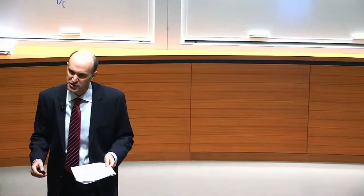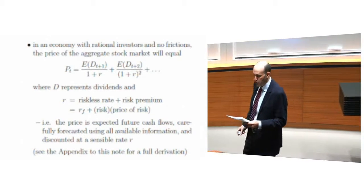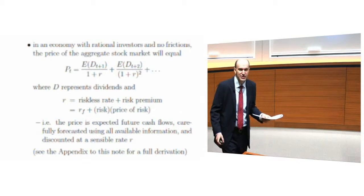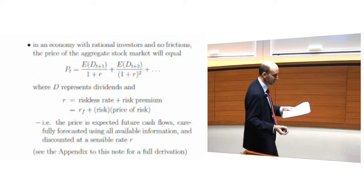What I want to do is start by thinking, if we were trying to explain stock market volatility from the rational perspective, what could we then say? In other words, how would we explain stock market volatility in an economy where everyone is fully rational? In such an economy with no frictions, the price of the aggregate stock market is given by the present value formula.